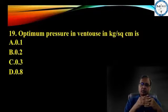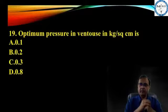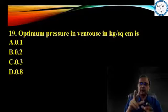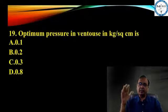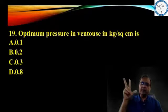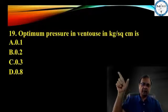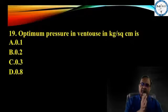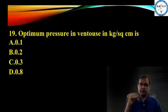Optimum pressure in Ventus in kg per square centimetre is 0.8. Please be very careful — although there are fair chances that the examiner will frame this MCQ like this only, that optimum pressure in Ventus in kg per square centimetre is 0.8 beta. Roughly, it corresponds to 600 millimetre of mercury. The pressure required in suction evacuation is also 400 to 600 — better answer is 600. So this 0.8 kg per square centimetre roughly corresponds to that 600 millimetre of mercury.